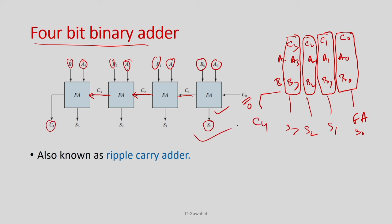So for 4 bits you have 4 such blocks; for 16 bits you have 16 blocks connected in a chain. This binary adder implementation is called the ripple carry adder because the carry ripples through the blocks to the final carry out. This is the first full adder implementation learned in this class.